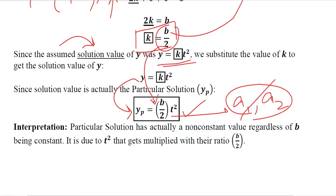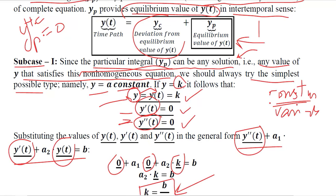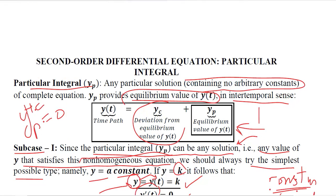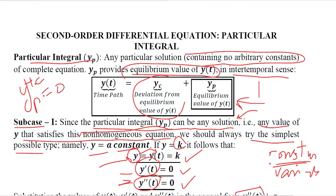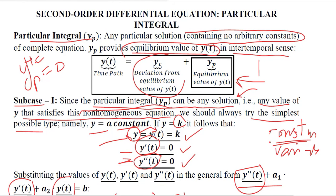In this way we have developed the three formulas — the three subcases of the particular solution of the second order differential equation in the non-homogeneous case. In the homogeneous case, all subcases of the particular integral are equal to 0. Thank you.